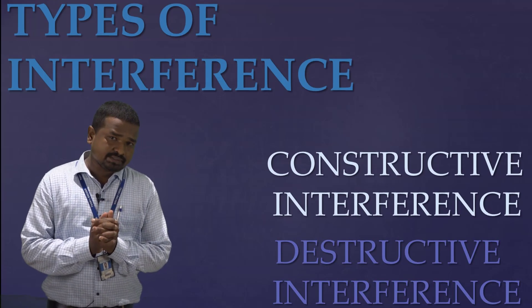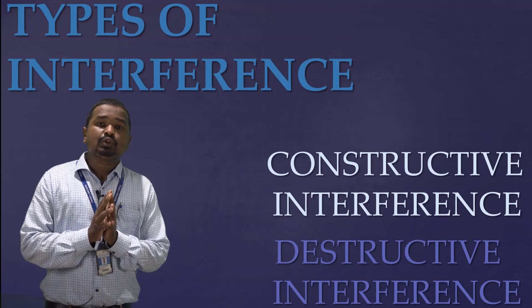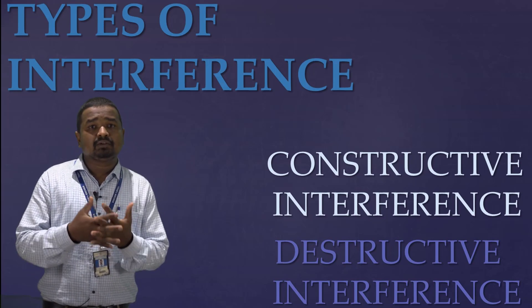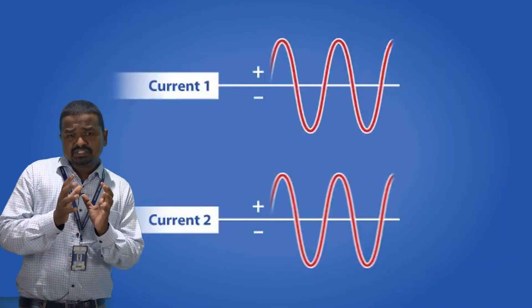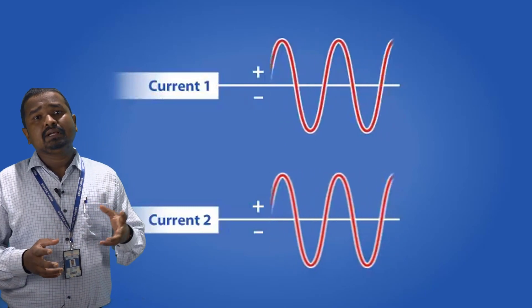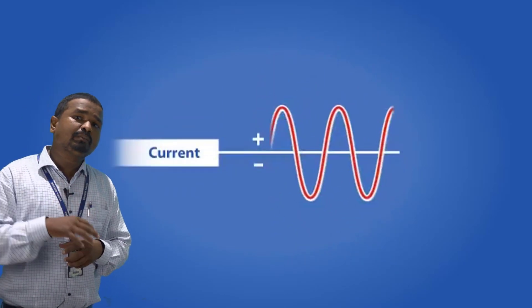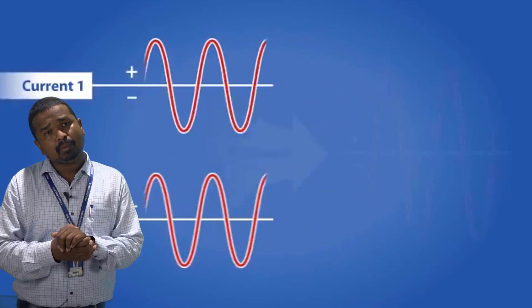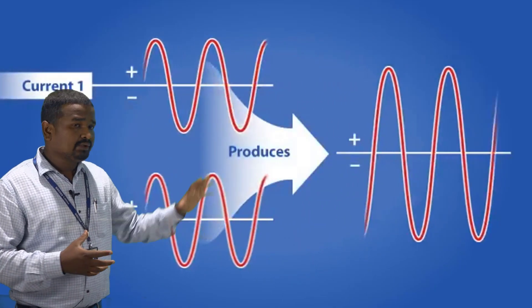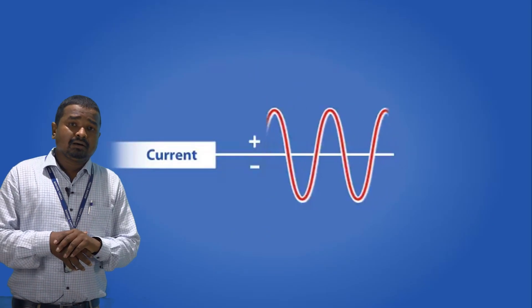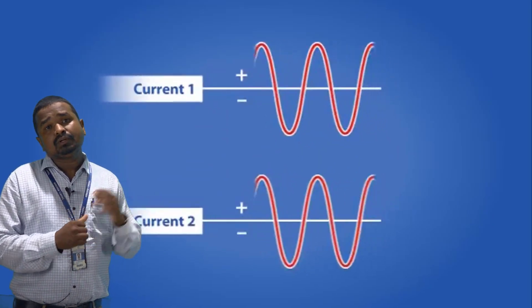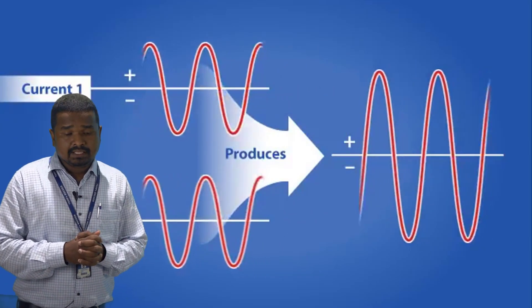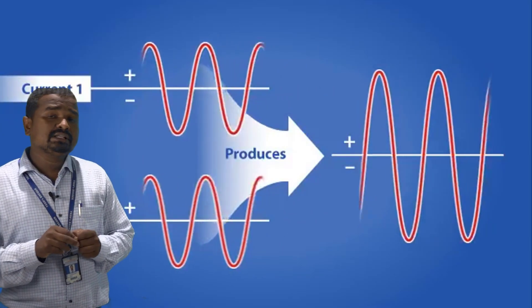There are two types of interference. The first is constructive interference, and the other is destructive interference. In constructive interference, the crest of one wave is superimposed over the crest of another wave, or the trough of one wave is superimposed over the trough of another wave. We get a resultant wave whose amplitude is the sum of the amplitudes of the individual waves. As a result, intensity increases in constructive interference.